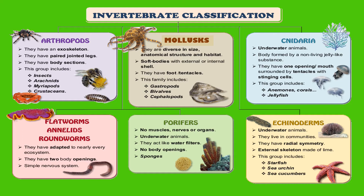The worm group includes flatworms, annelids, and roundworms. They are adapted to nearly every ecosystem on Earth. They have two body openings and a simple nervous system. Porifera have no muscles, nerves, or organs. They are underwater animals and they act like water filters. They have no body openings, and this group includes sponges.